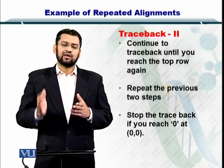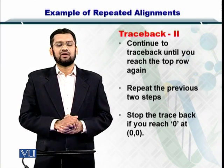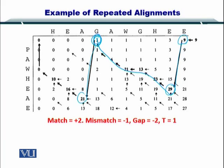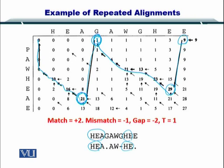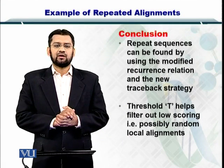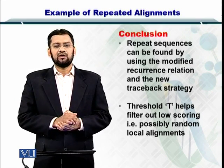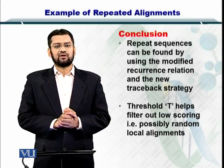In this way we can complete the traceback and extract the repeated alignments. Here the repeated alignments are shown once again. We started from here, we jump to 29 and we continue the traceback until we reach 1, and then we jump to 21. Then we kept moving until we reached 0 in the first row and the first column. The alignments that we obtained once again are given here for you. So in conclusion, the repeated alignments can be found by using a modified traceback strategy and a threshold T which will filter out anything that is less than that threshold.